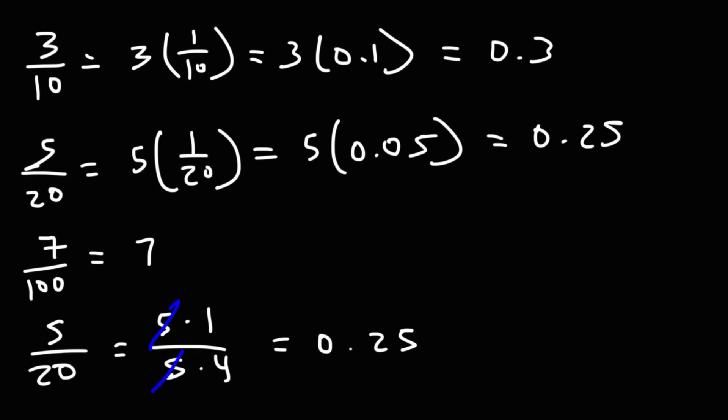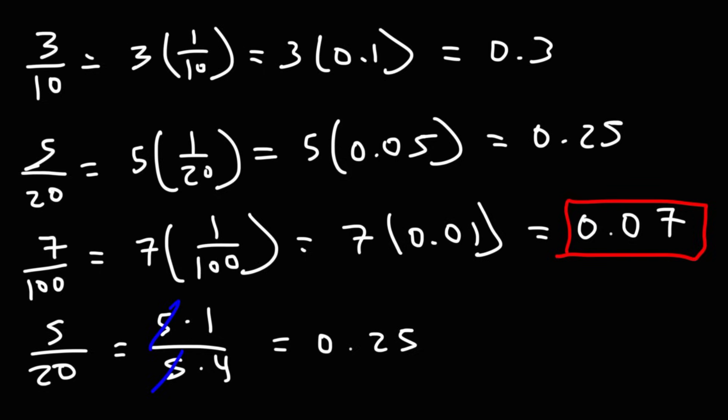Now 7 over 100 is 7 times 1 over 100, and we know that 1 over 100 is 0.01. 7 times that will be 0.07. So once you know the decimal values of a few basic fractions, you can use that to find the decimal values of other fractions. Let's work on two more examples.